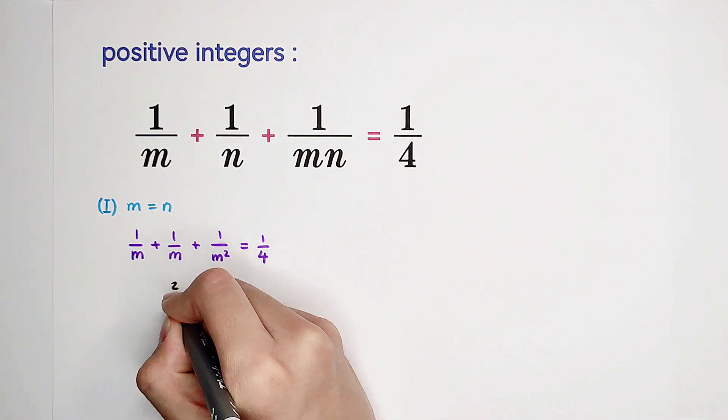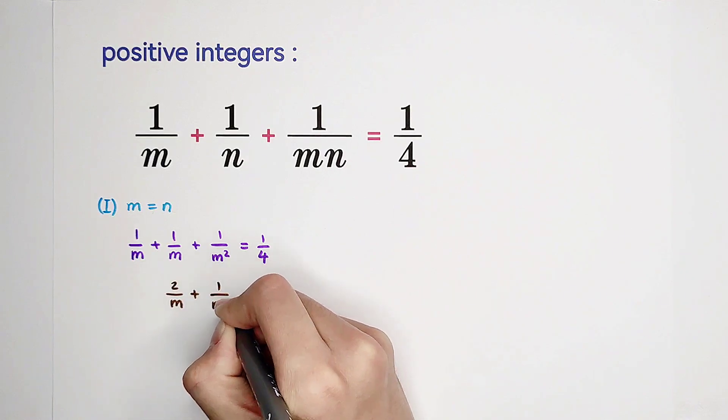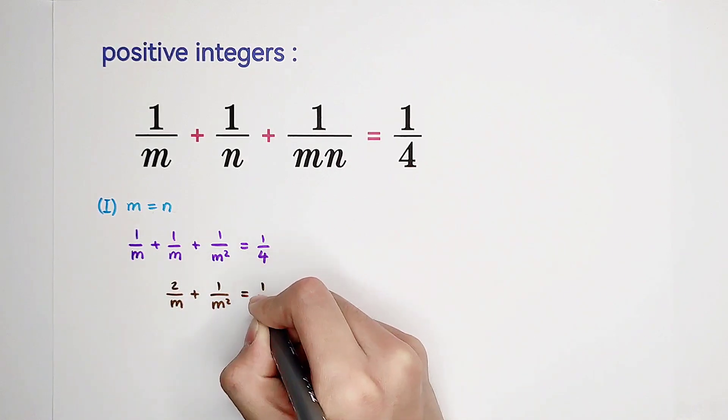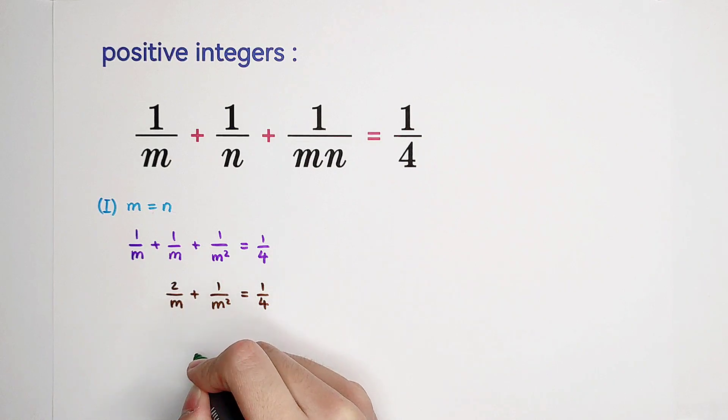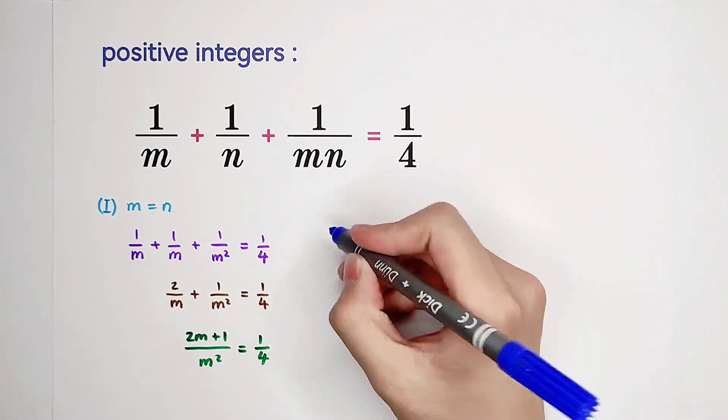So it is 2 over m plus 1 over m squared equals 1 over 4. So it is 2m plus 1 over m squared equals 1 over 4.